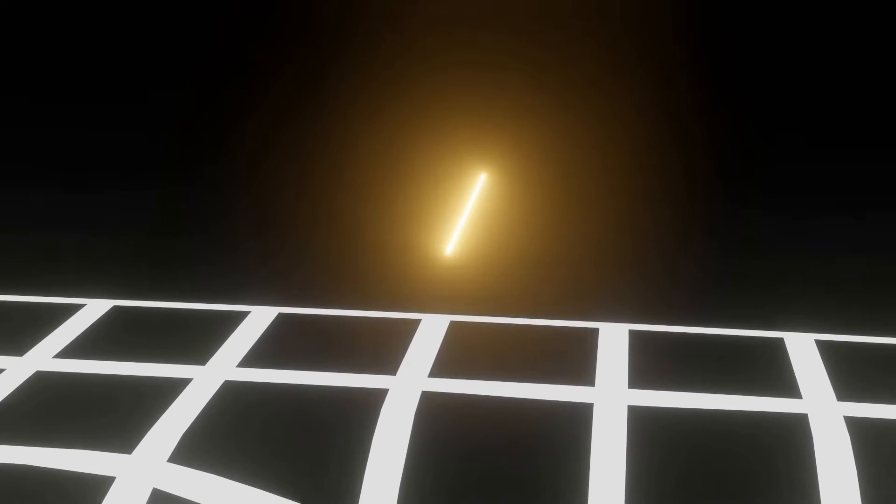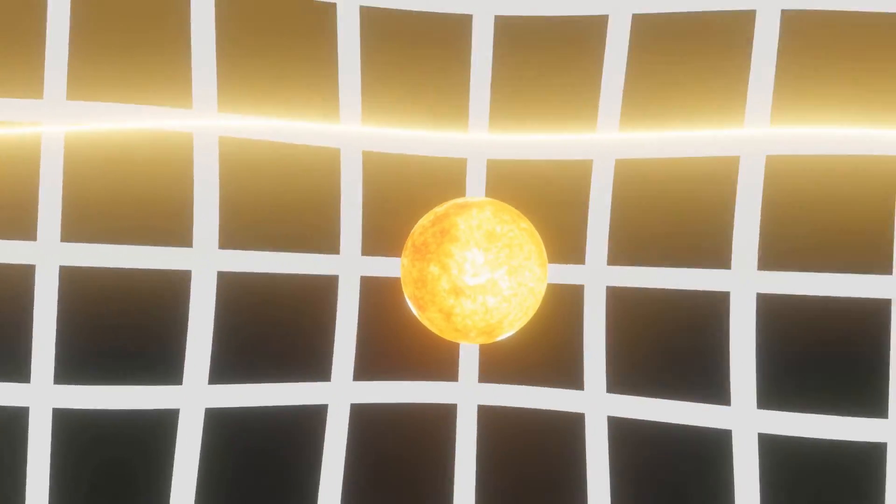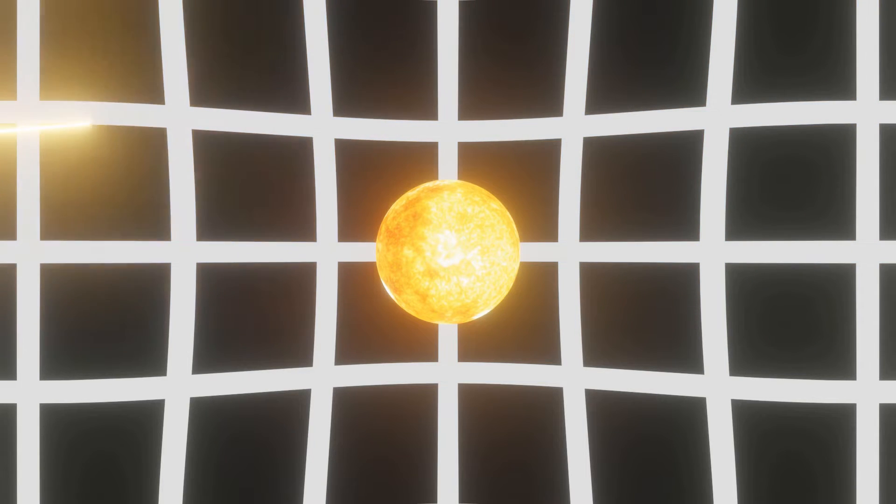Well, anyways, back to light. Light follows the path of spacetime and moves with it. So if I were to shoot a light beam next to the sun, for example, it would slightly change direction as it travels across the warp spacetime. We call this phenomenon gravitational lensing.